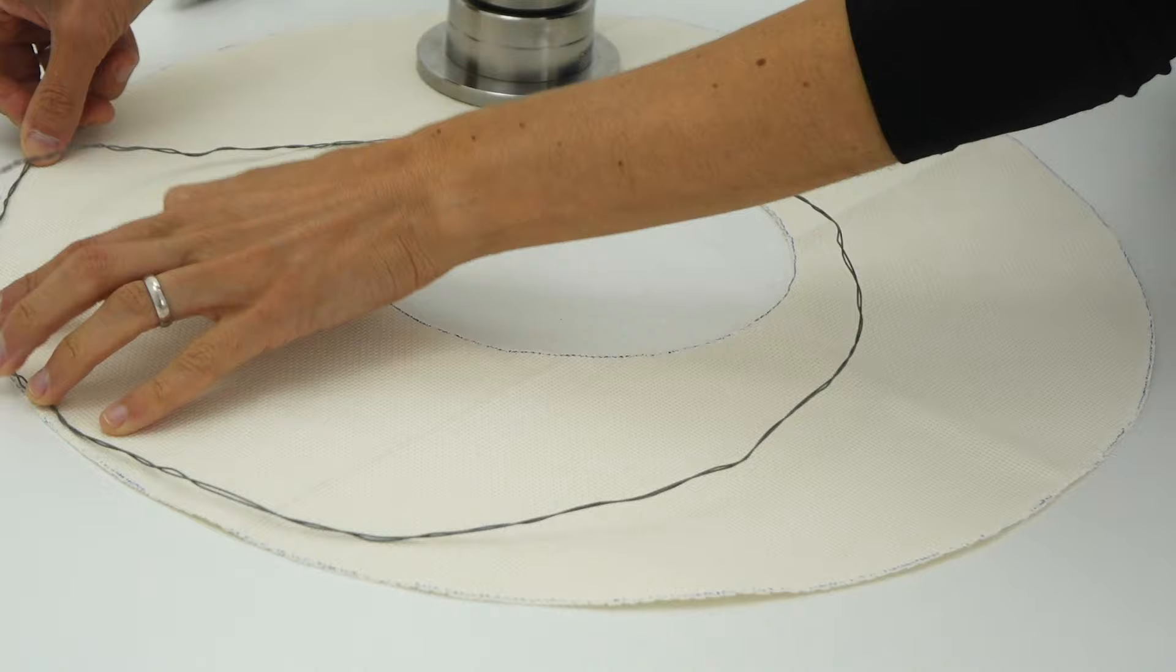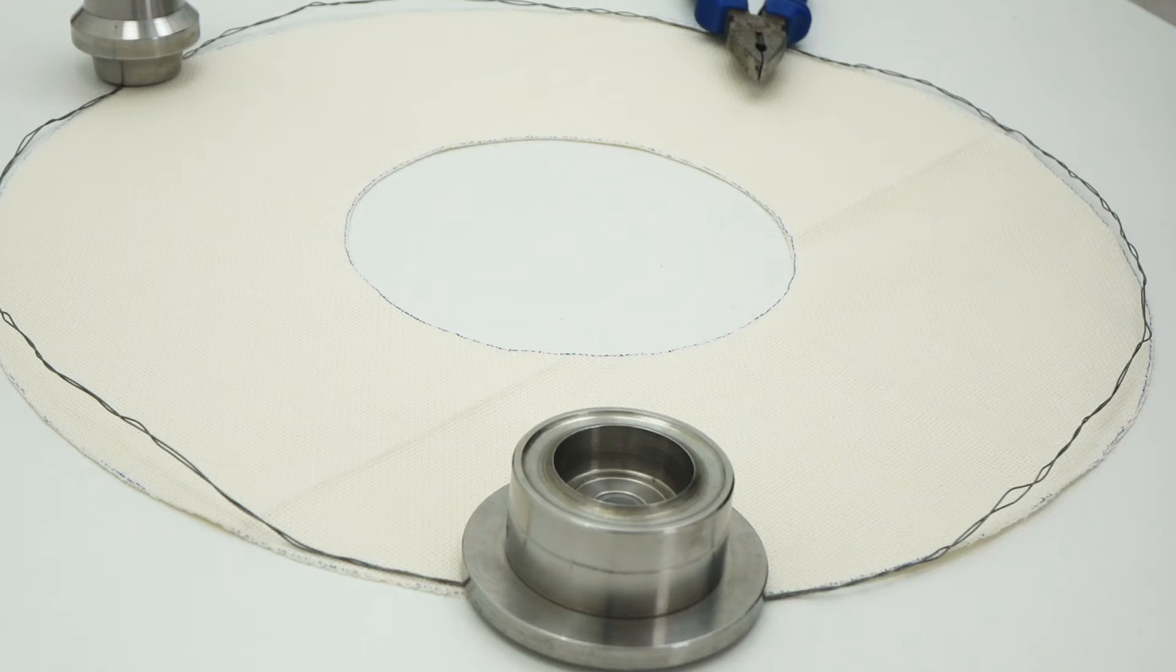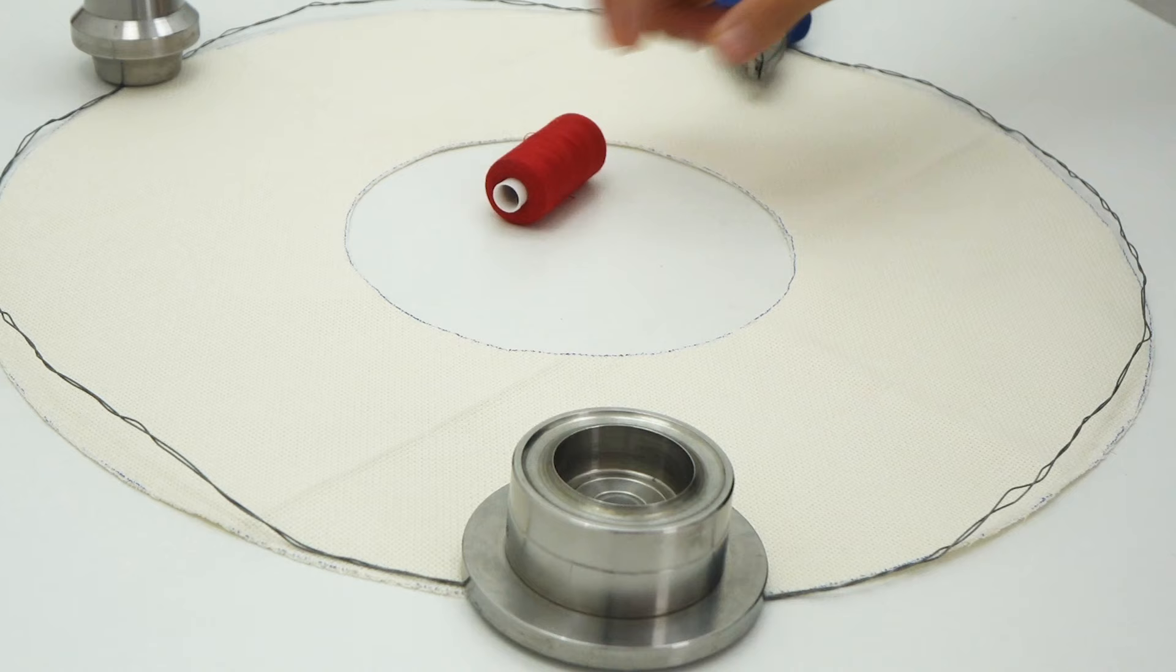We cut the excess with the appropriate tool of course, not our sewing scissors alright. And then we can quickly sew the wire with a thread and a needle.